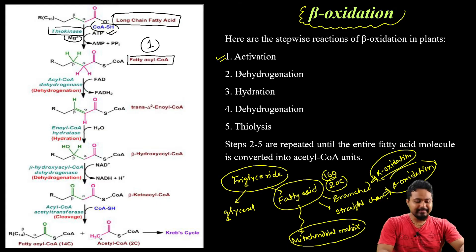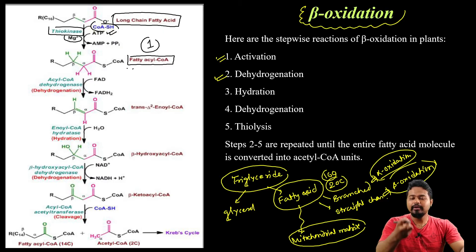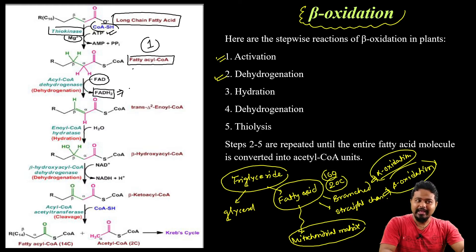Second step is dehydrogenation. Meaning fatty acyl-CoA will lose hydrogen. So FAD will be converted into FADH₂. FADH₂ is the energy molecule. So FADH₂ finally goes to the electron transport chain, and the electron transport chain will help ATP synthesis.